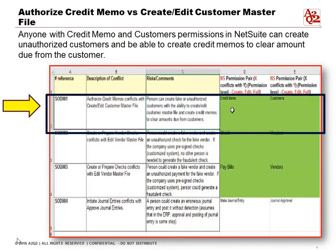The first rule is authorizing a credit memo vs. creating or editing the customer master file. The risk here is that anyone with credit memo and customer permissions in NetSuite can create unauthorized customers and create credit memos to clear the amounts due from that customer. So essentially, they could sell to friends and their friends don't have to pay for it.